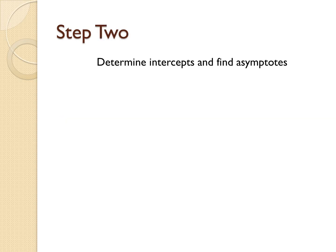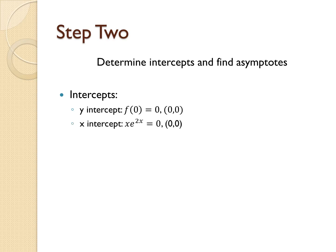For step 2, we need to determine intercepts and find asymptotes. Let's find our y-intercept by evaluating f(0). Because our original function is xe^(2x), this evaluates to 0, giving us a y-intercept at (0, 0). If we find the x-intercept by setting our function equal to 0, the only way it becomes 0 is by making x equal to 0, so our x-intercept is also (0, 0).